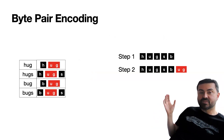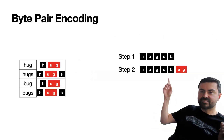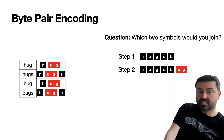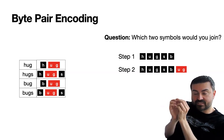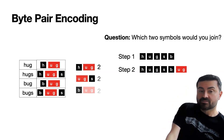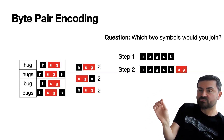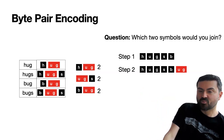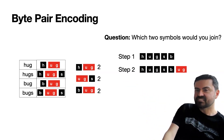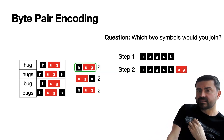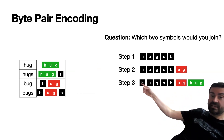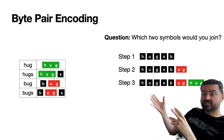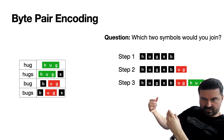Now I can type the words with just two or three tokens. Let's do it one more time. Which two tokens in this list would you join next? H-UG appears twice, UG-S appears twice, B-UG appears twice, and the rest appears zero times. So we could go for any of those three — when there are ties, we just pick randomly. Let's pick HUG, so HUG is now a new token. Now the first word 'hug' is a single token, the second word 'hugs' is two tokens, and the third and fourth words are still split.